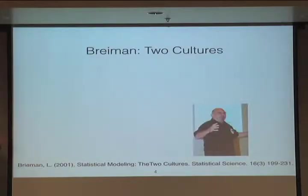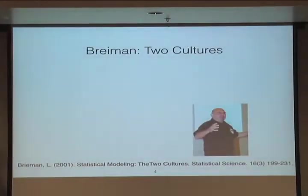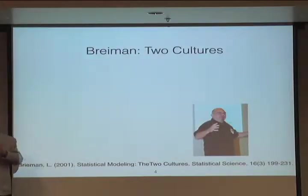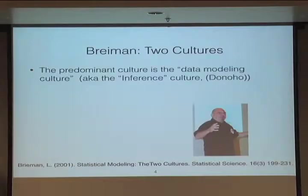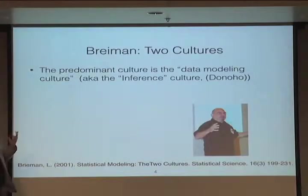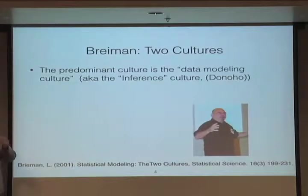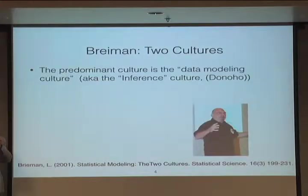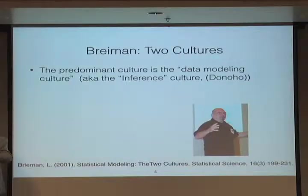In 2001, Leo Breiman, a statistician at Berkeley who has since passed away, wrote a groundbreaking paper called 'Statistical Modeling: The Two Cultures.' He claimed there were two different ways of creating models in statistics. The predominant culture was what he called data modeling — later called the inference culture. The idea is that the goal of statistics is to develop models that tell us something about the real world, and when we do inference, we use those models to understand the larger world. The key idea is always that your model needs to look something like nature.